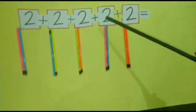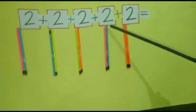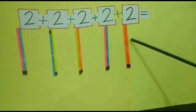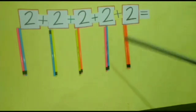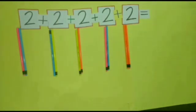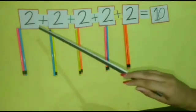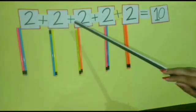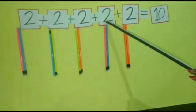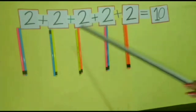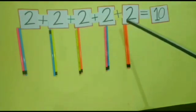The fourth child also got two pencils. Now, six plus two — eight. And the fifth child also got two pencils. So, eight plus two — ten pencils. So, two plus two plus two plus two plus two: adding five groups of two. How much have we got? Ten.